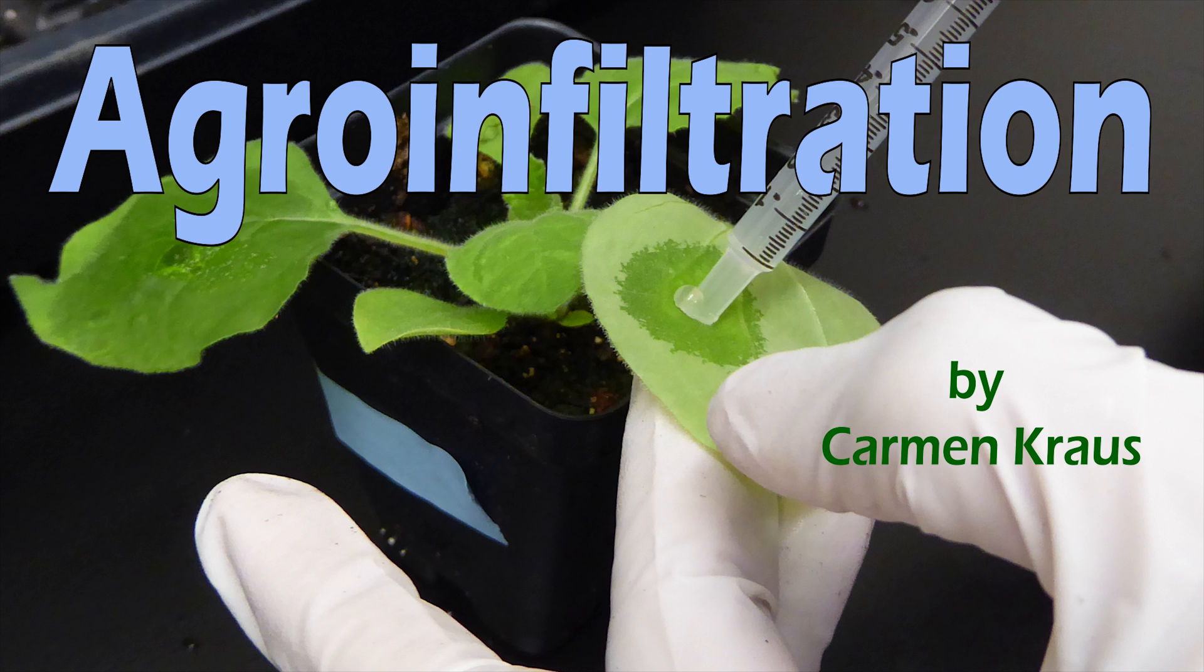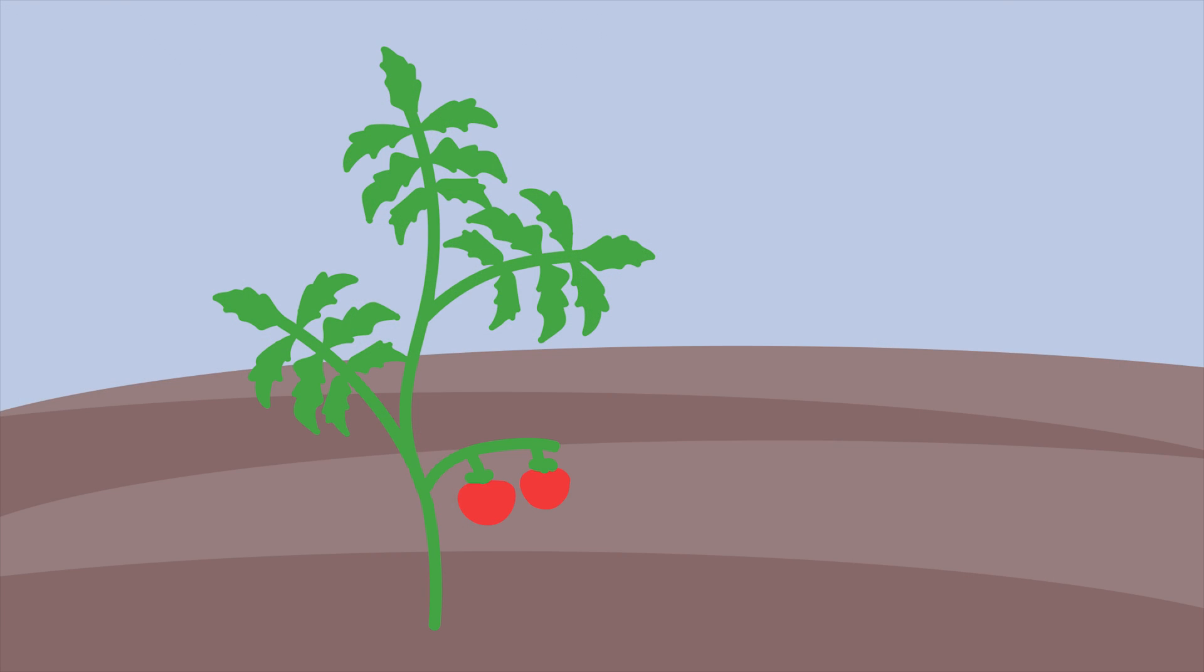Hello! In the next few minutes, I'm going to explain agroinfiltration and why it's a useful tool for plant breeding. In plant genetics, it is important to understand how genes control the expression of different traits. For example, what gene makes a beefsteak tomato so large while a cherry tomato is so small?